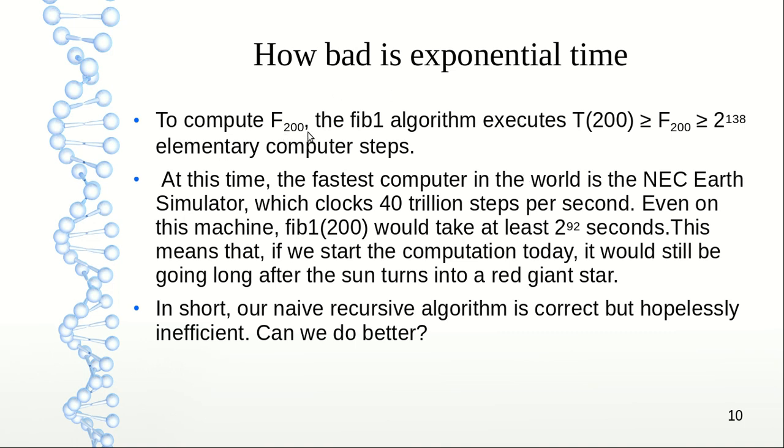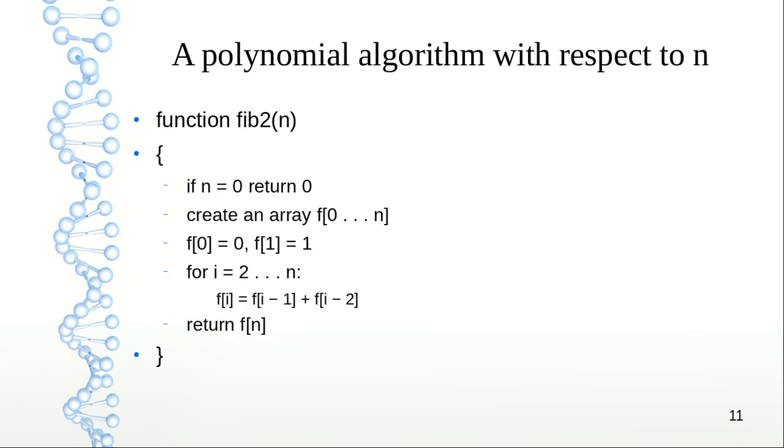If you use the fastest computer present today on Earth, it will take 2 to the power 92 seconds, which is even more than the time it will take for our sun to convert into a red giant star. In short, our naive recursive algorithm is correct but hopelessly inefficient. So the way algorithm research proceeds is to ask: can we do better than what we had before? Let's look for a polynomial algorithm with respect to n.